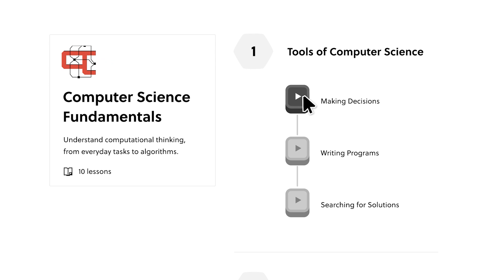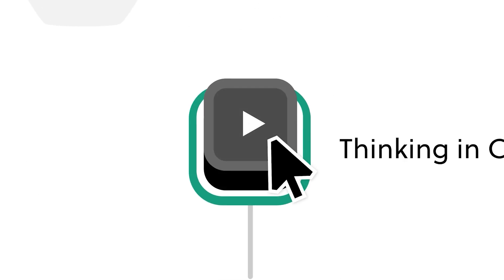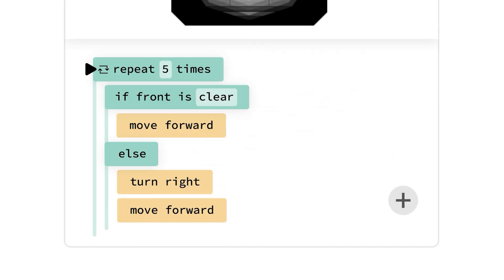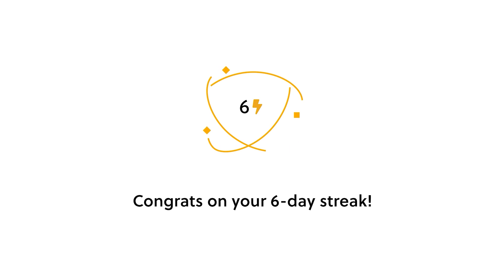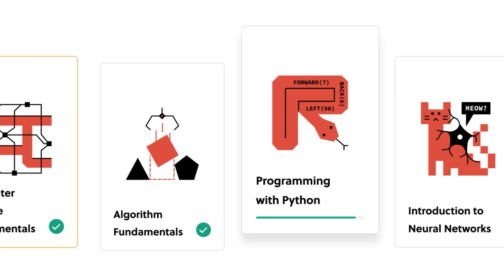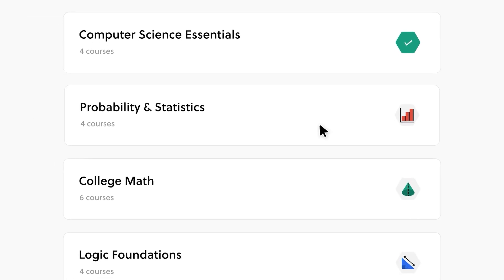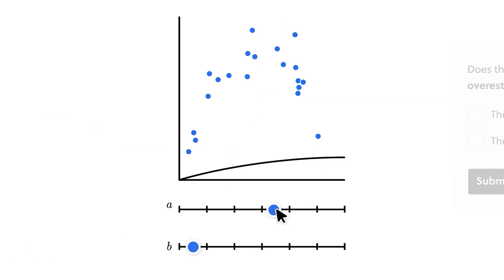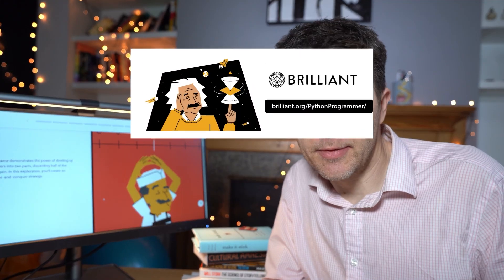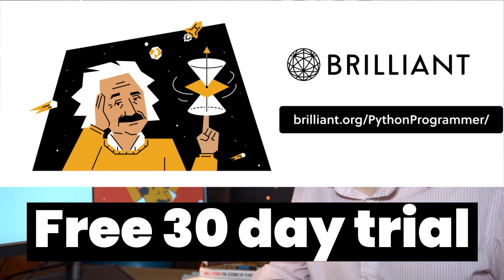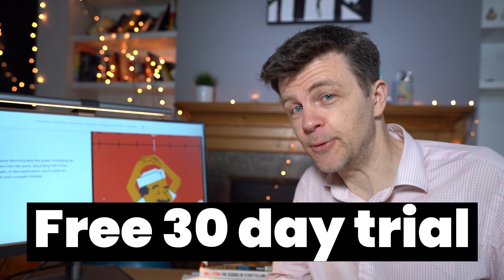They make learning challenging and fun, providing you with the tools to think critically and solve complex problems. One course I think you might be interested in is Computer Science Fundamentals — by the end of it, you'll have a thorough understanding of core computer science concepts. Interactive learning has been proven to be six times more effective than passive learning. Go to brilliant.org/PythonProgrammer or click the link in the description, and the first 200 of you will get 20% off Brilliant's annual premium subscription.